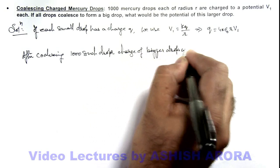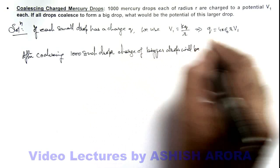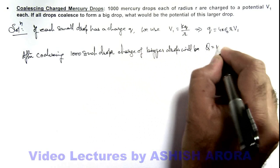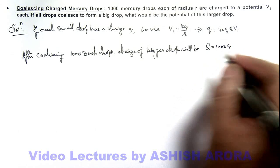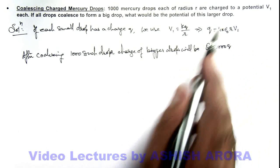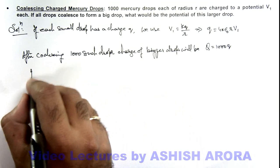We can write this as Q = 1000q, since q is the charge on each drop. And we can write: if capital R...